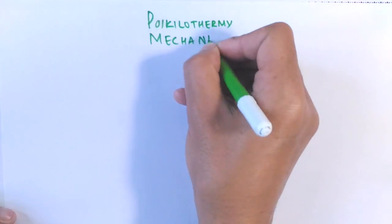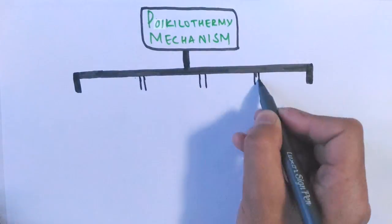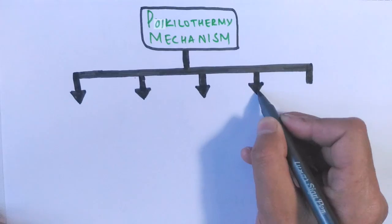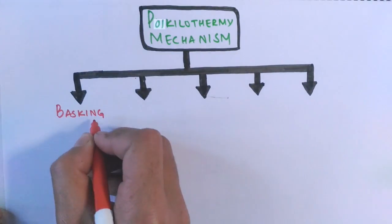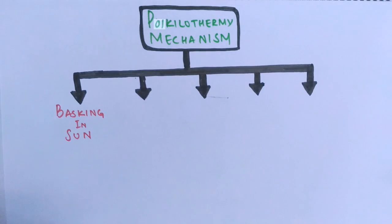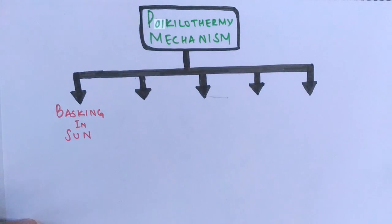Now let's see what's the mechanism behind poikilothermy. Poikilothermy is achieved through five known mechanisms, of which the first easiest one is basking in the sun. In this process, the animal basks in the morning sun to raise their internal body temperature and stimulate their metabolism.